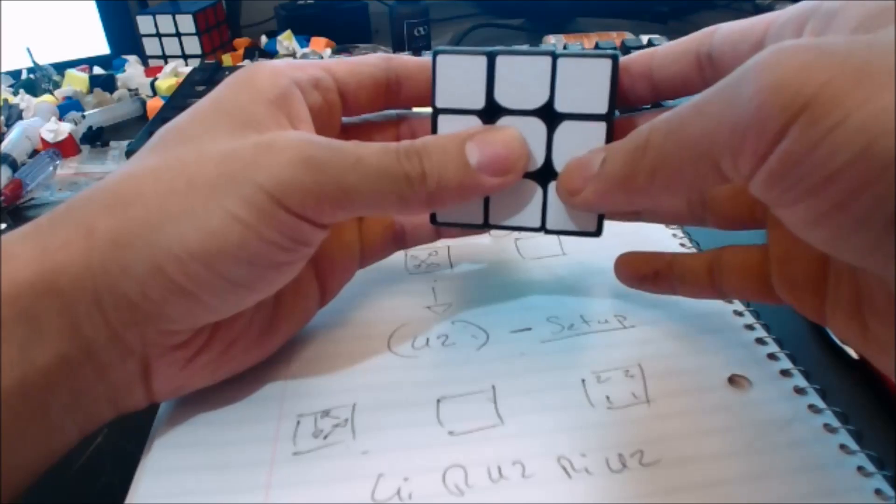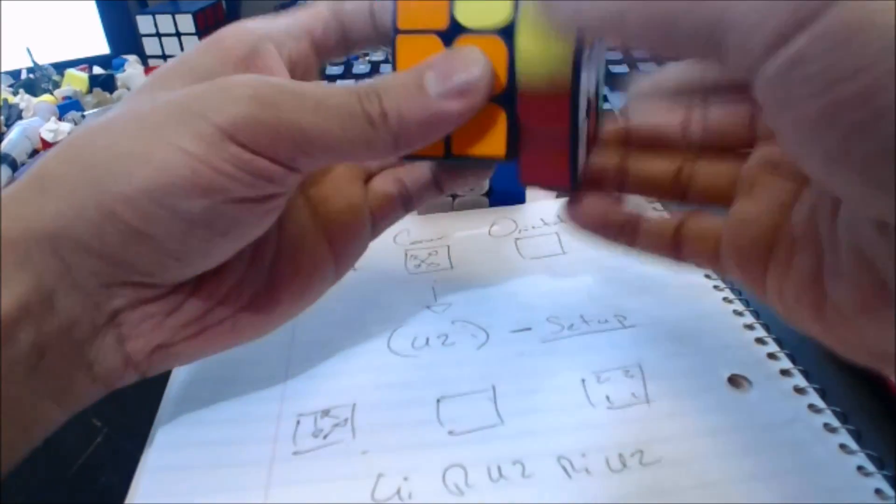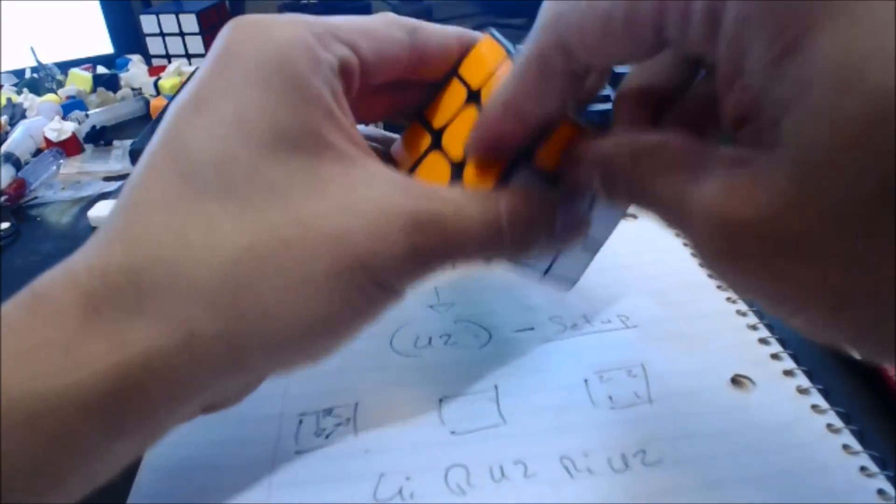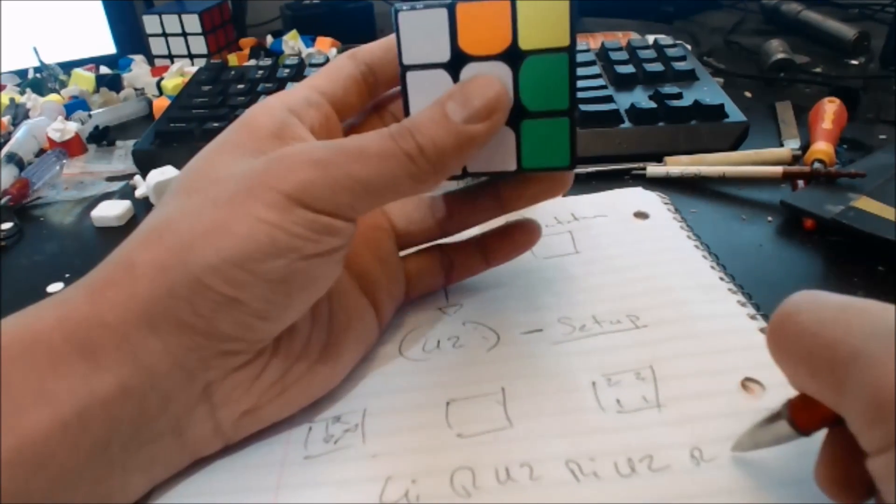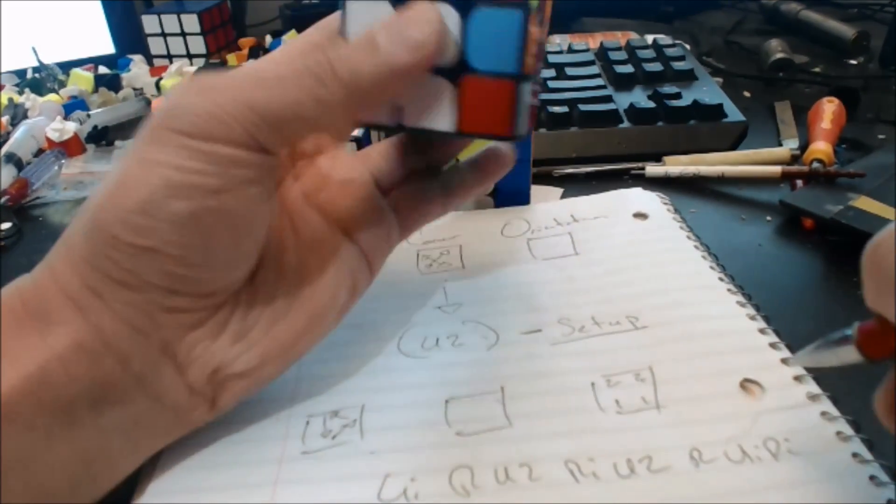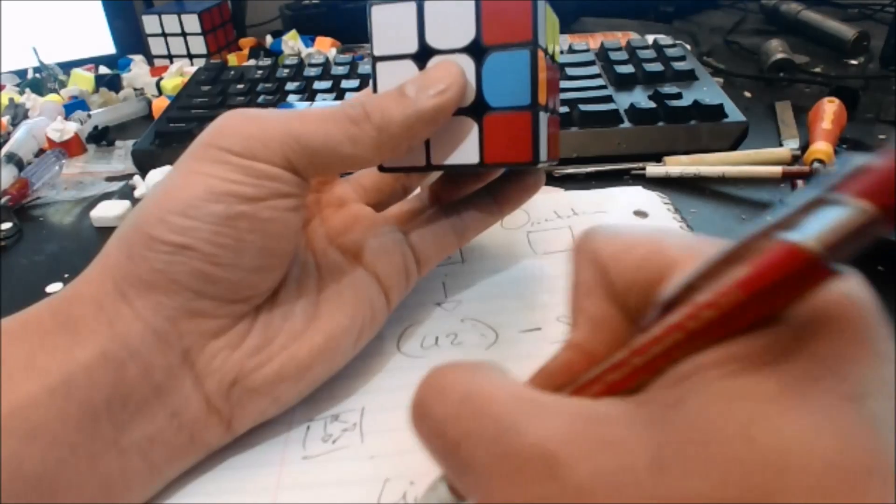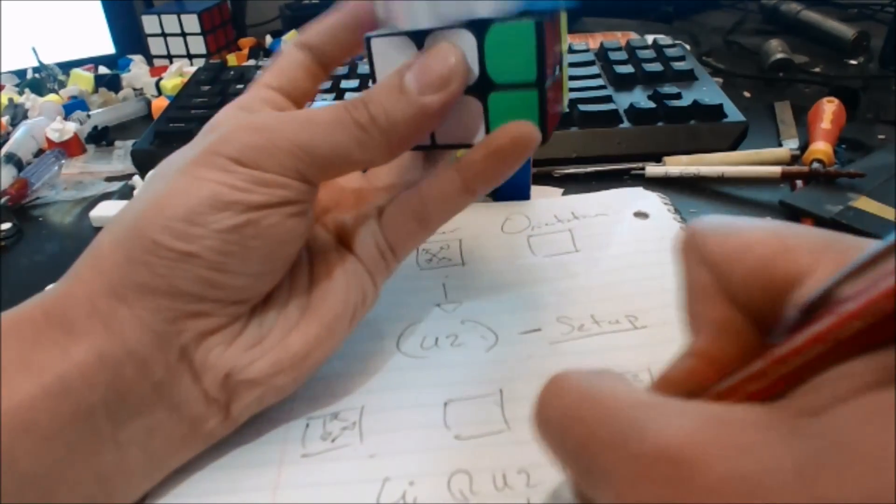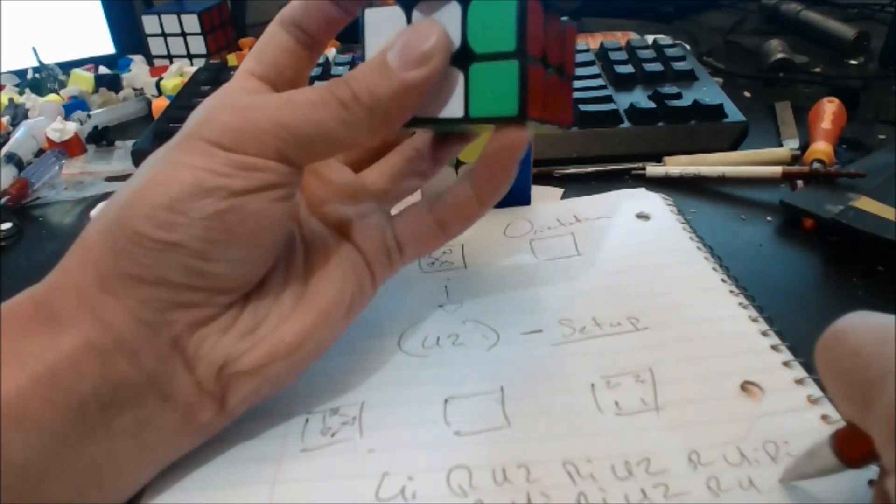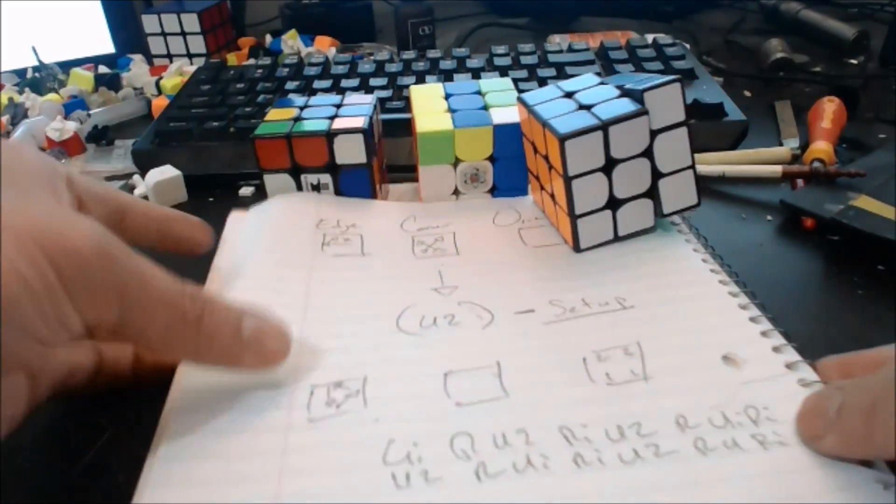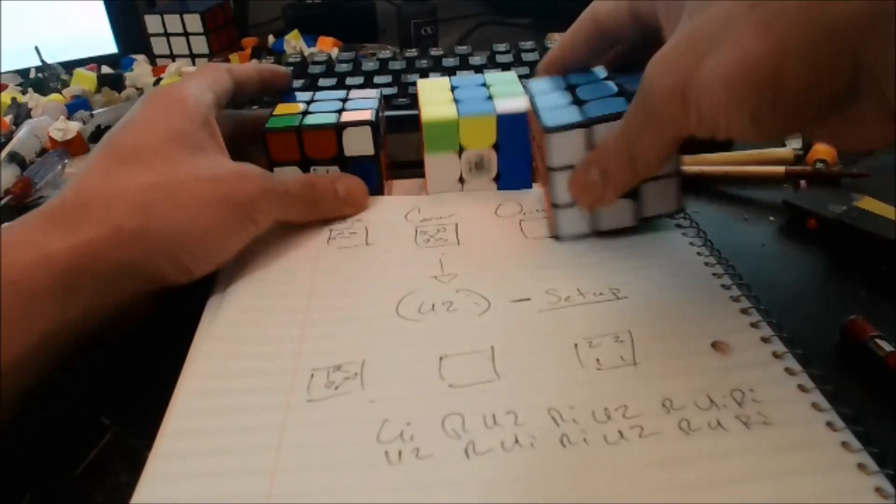I don't want to mess this up on camera, so let me try to set this up again and then completely write it out. So R U prime R prime U2 R U prime R prime U2 R U R prime. So I wrote out the ZBLL.